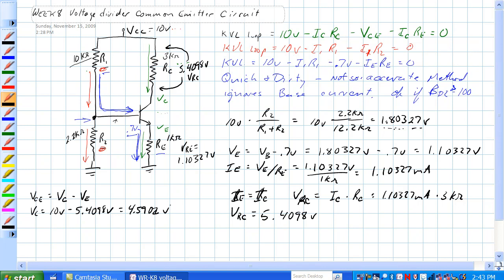So VCE is equal to 4.5902 volts minus 1.10327 volts, which equals 2.787 volts.